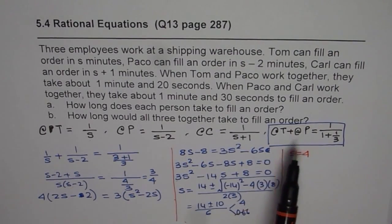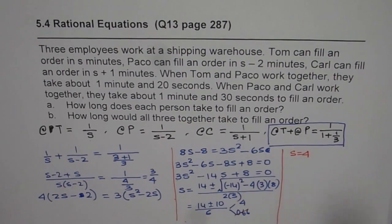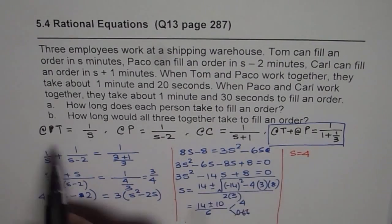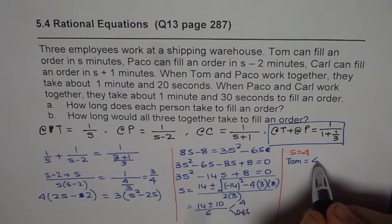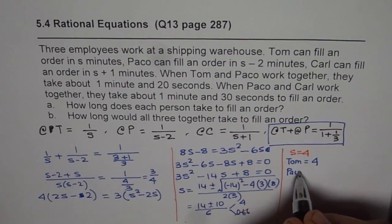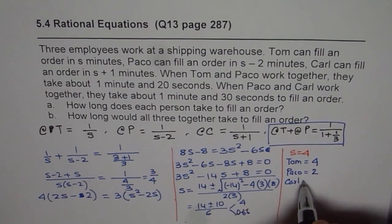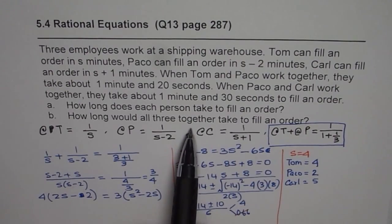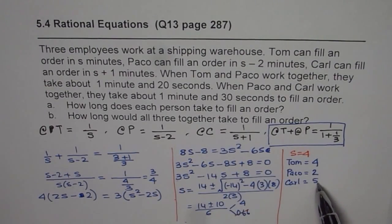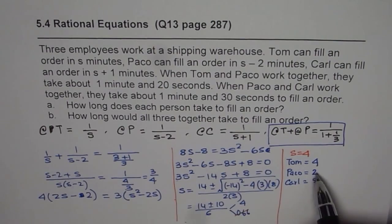Now that we know S equals 4, we can find how long each person takes to fill an order. For Tom it is S, which is 4 minutes. For Pecco it is S minus 2, which is 4 minus 2 equals 2 minutes. For Carl it is S plus 1, which is 4 plus 1 equals 5 minutes.